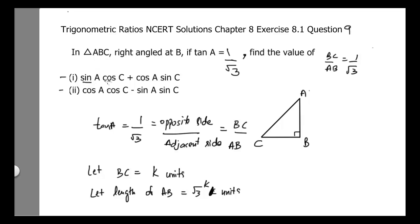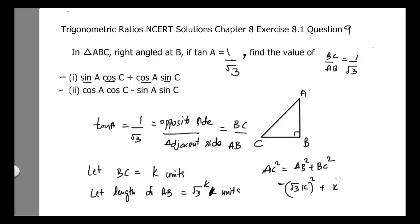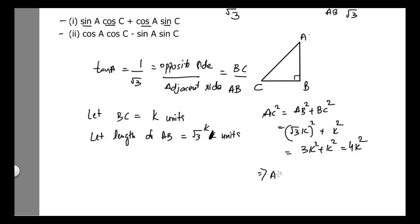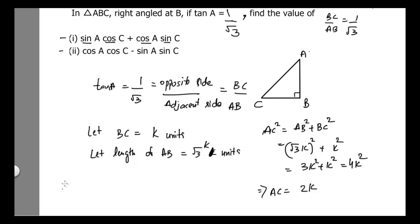From here we can find the values of sin A, cos A, sin C, and cos C. But first we need to find AC using the Pythagorean theorem. AC² = AB² + BC² = (√3K)² + K² = 3K² + K² = 4K². So AC equals 2K.